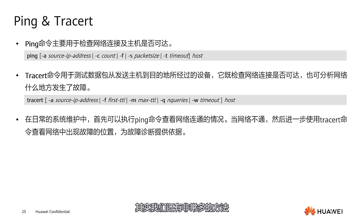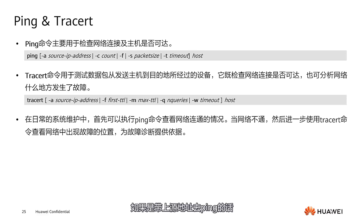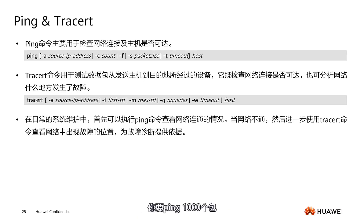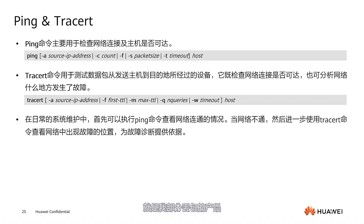It specifically shows how many different terminals there are — for example, 32 total, with 20 on 2.4G and 12 on 5G. Generally, this is well below our threshold. You can afford to relax it a bit, like allowing up to 30 on 2.4G and up to 30 on 5G, which is quite common.